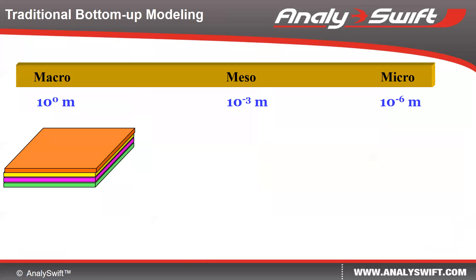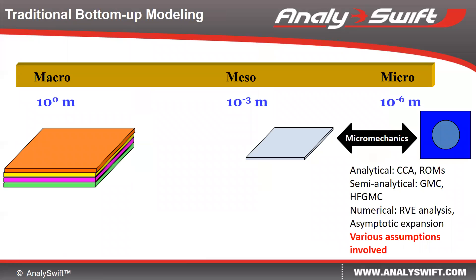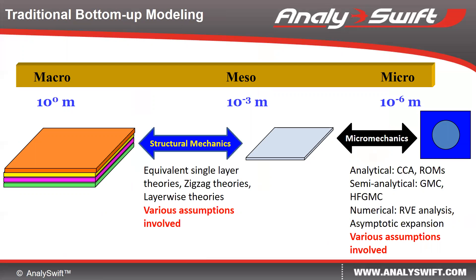The traditional modeling approach is a bottom-up approach. For example, to analyze a composite laminate, we use micromechanics to compute the laminar constants in terms of our microstructure containing fiber and matrix. Then the laminar constants are used as inputs in a structural mechanics model to perform structure analysis.